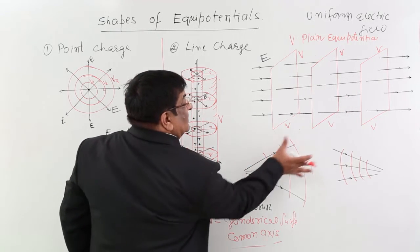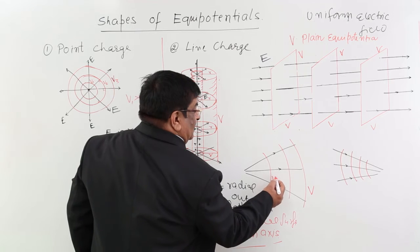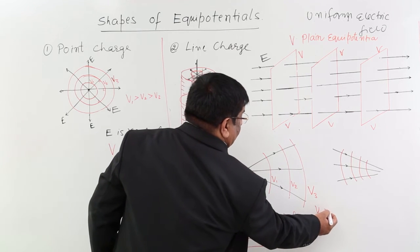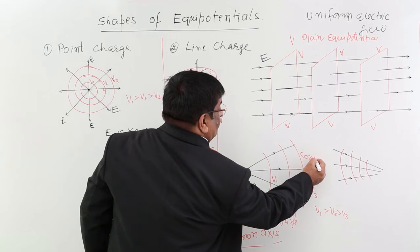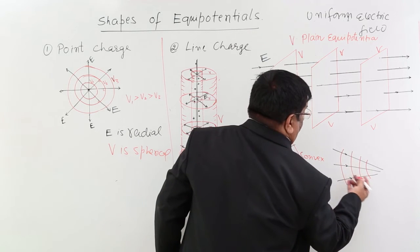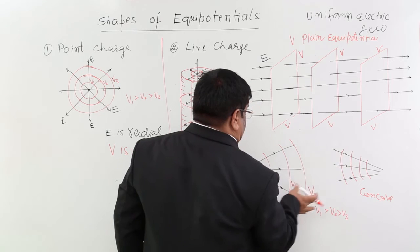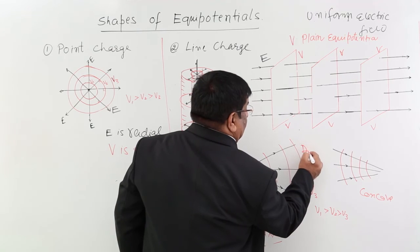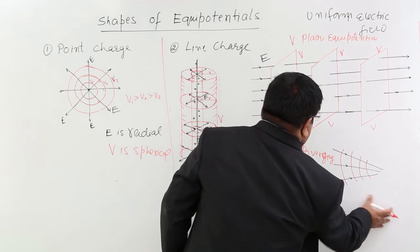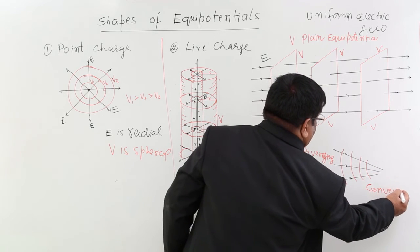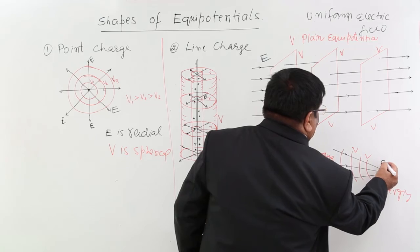If our electric field is radially outward, then these are the convex shape of potential — V1, V2, V3 — where V1 is greater than V2 is greater than V3. These are known as diverging, and physically the shape is convex. The other type are converging, and physically concave. The red ones are equipotentials and the black ones are electric field lines.